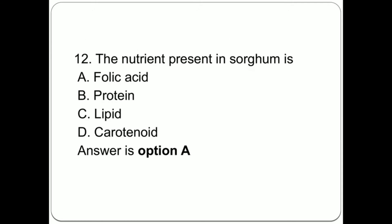Question 12: The nutrient present in sorghum is: A. Folic acid, B. Protein, C. Lipid, D. Carotenoid. Answer is option A, Folic acid.